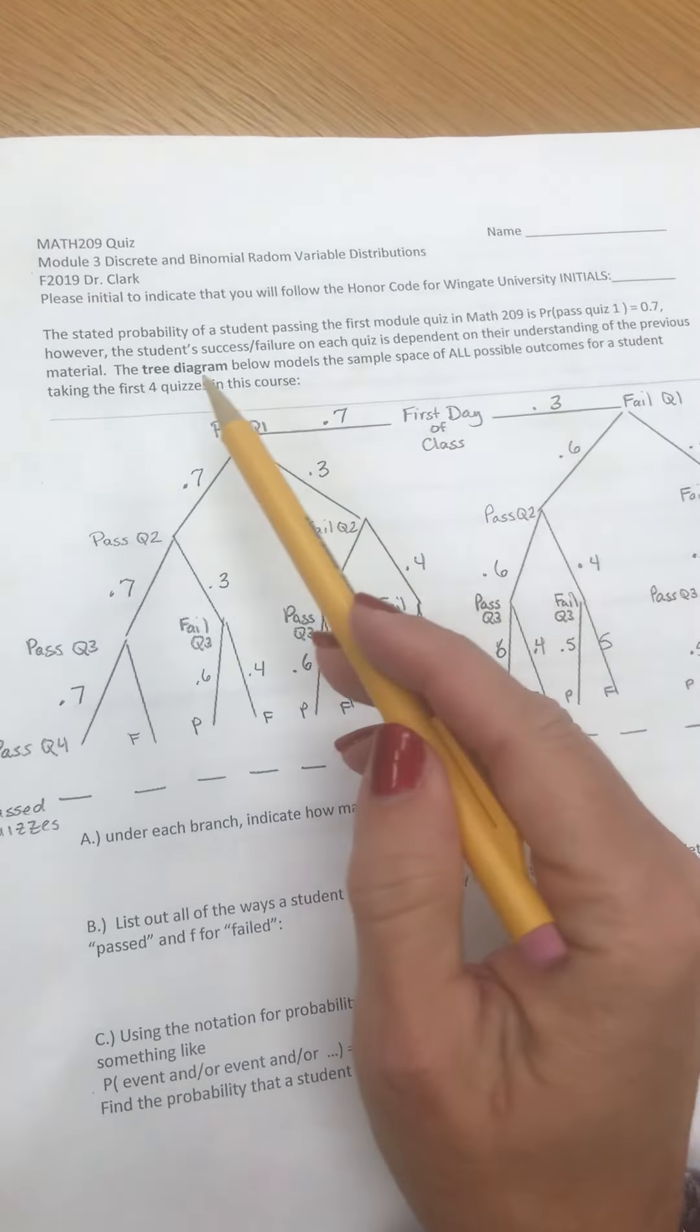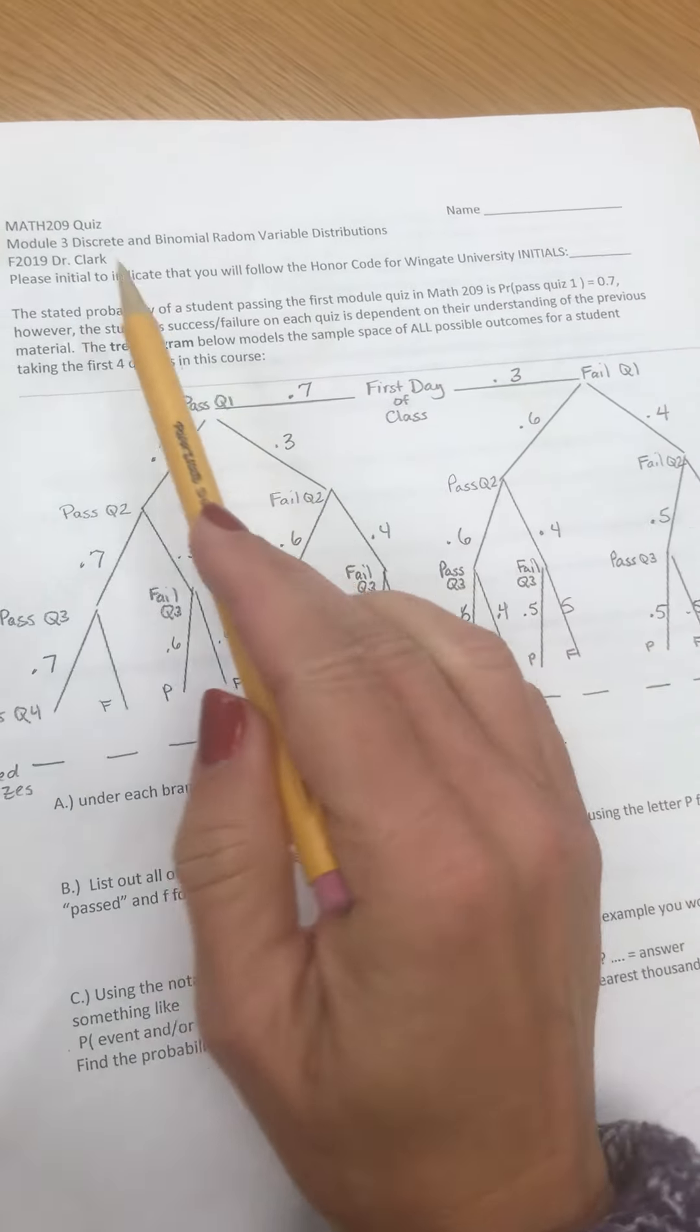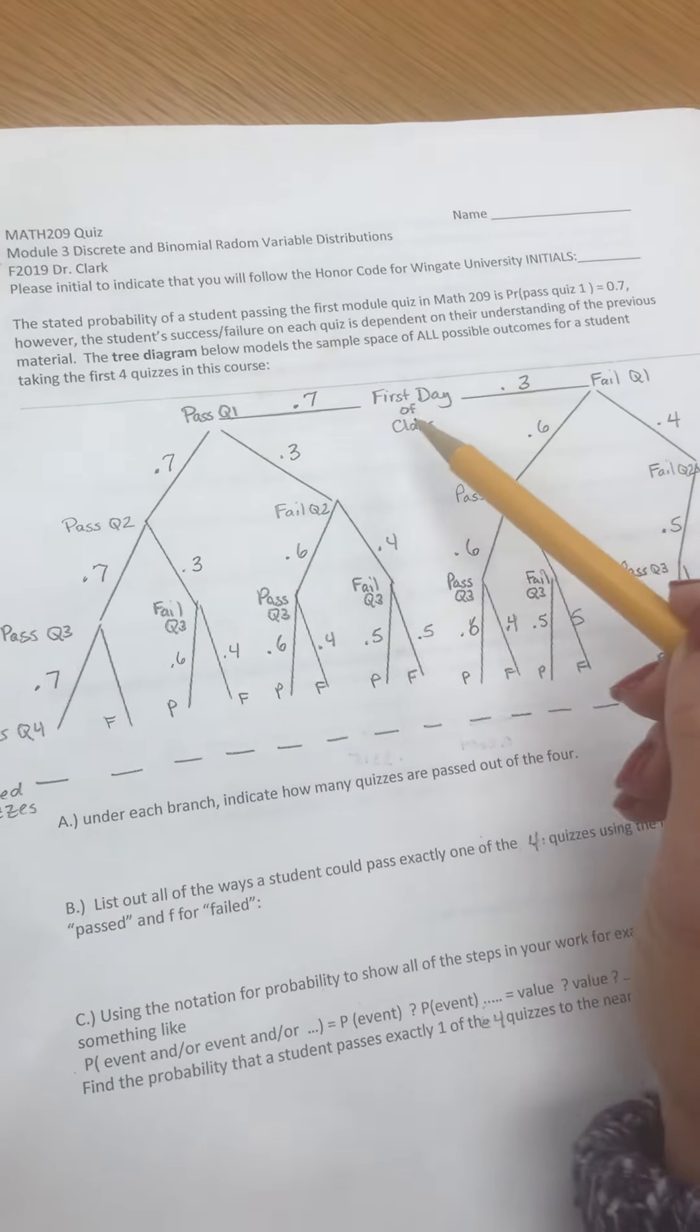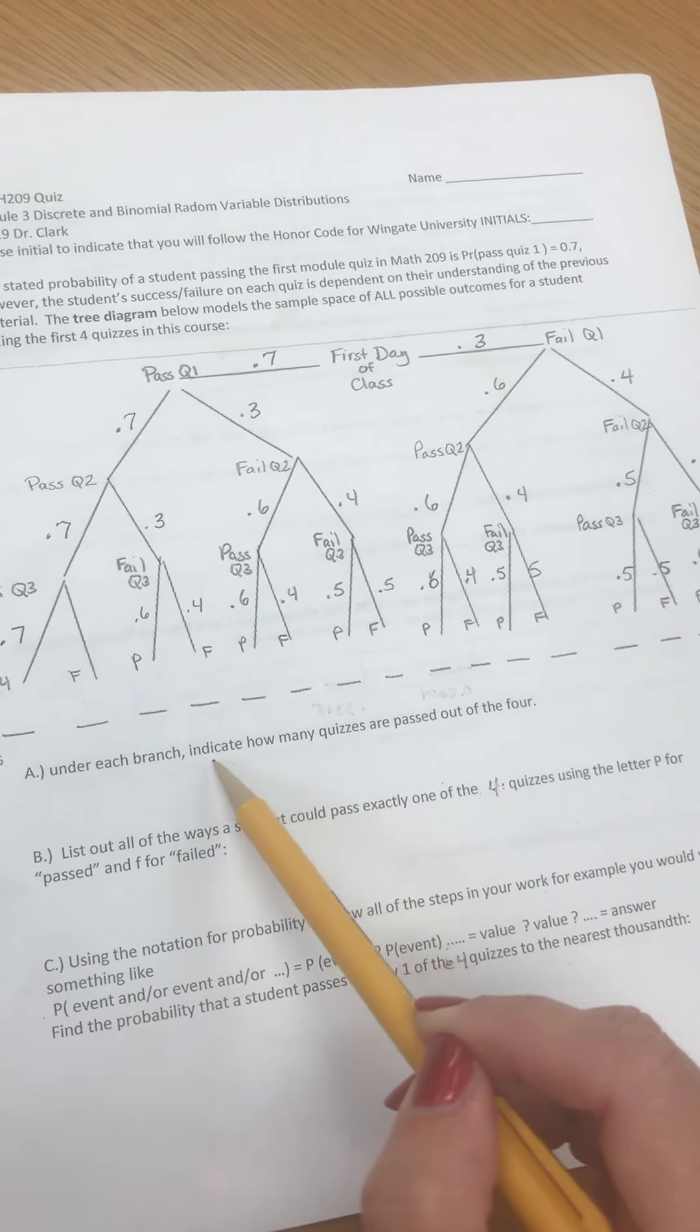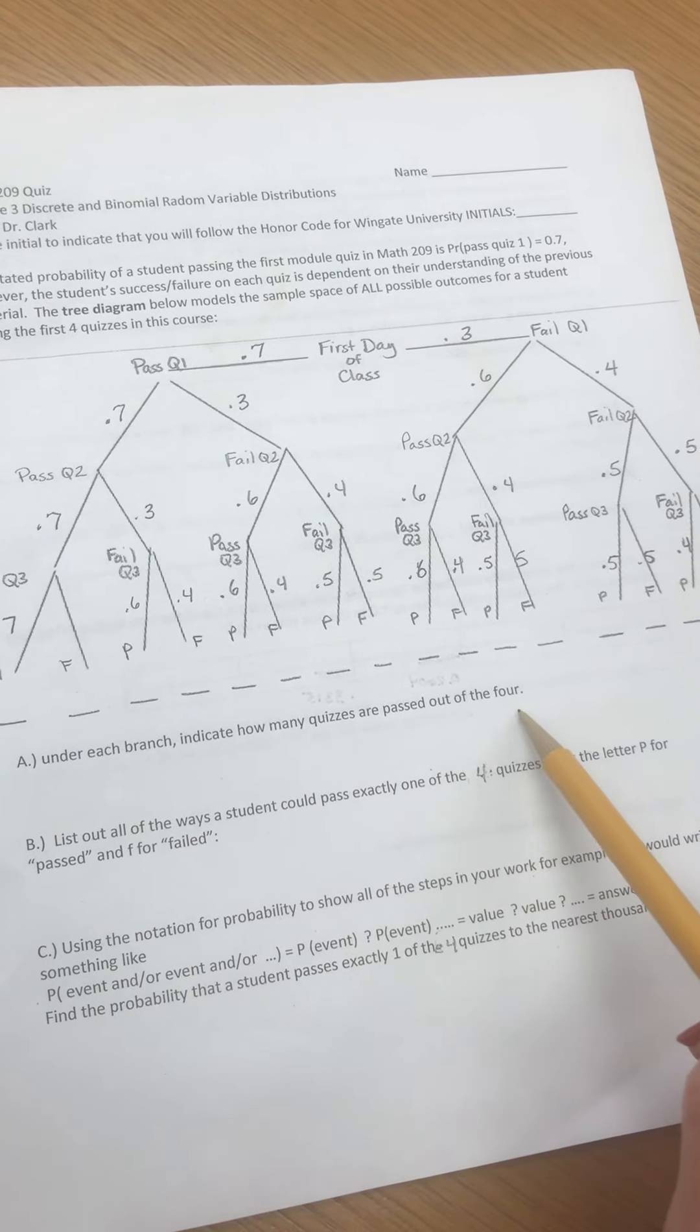Okay, a really quick pass over through Module 3. We have our tree, first day of class, and under each branch of the decision tree we're going to indicate how many quizzes are passed out of the four.